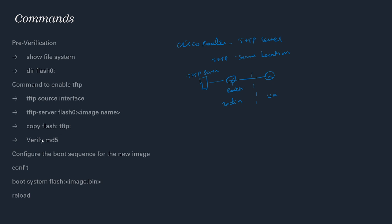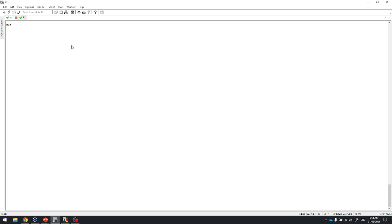Once the image is copied, verify the MD5 using the 'verify' command to match the source image MD5 and the destination image MD5 after it's downloaded. Verifying MD5 is a mandatory step. After that, go to configuration terminal, enable the boot sequence, then write and reload the router to successfully complete the upgrade.